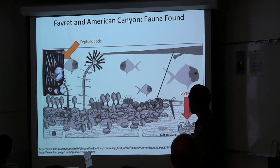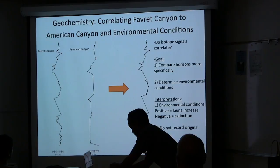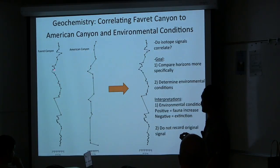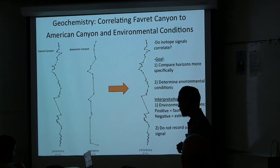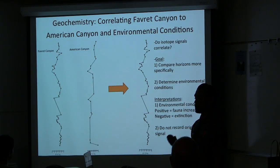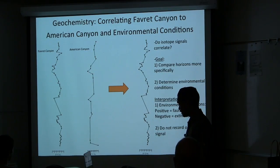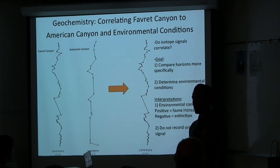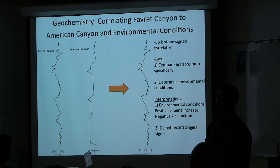Fauna observed in Favrit and American Canyon include cephalopods and bivalves. This project uses marine carbon isotopes to describe environmental conditions and to further correlate Favrit to American Canyon. Positive carbon isotopes could be caused by an increase of organic burial via phytoplankton or an increase in C4 plants, and suggest fauna recovery. Negative carbon isotopes could be caused by volcanic CO2 release and silicate weathering, and suggest mass extinctions.